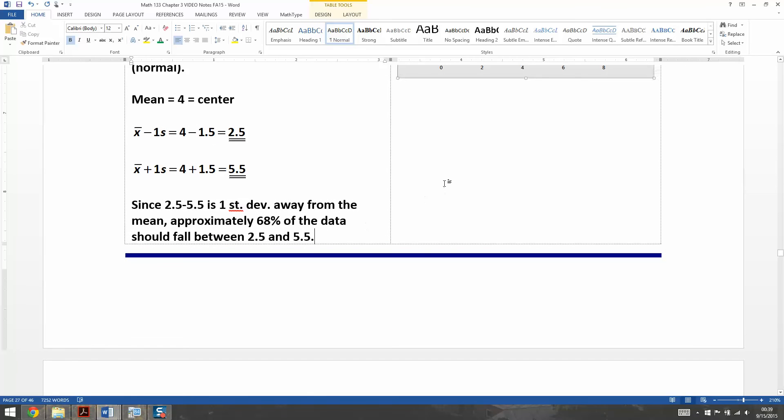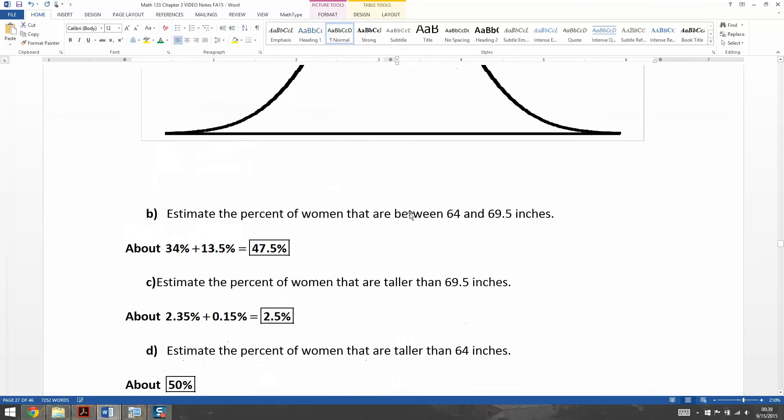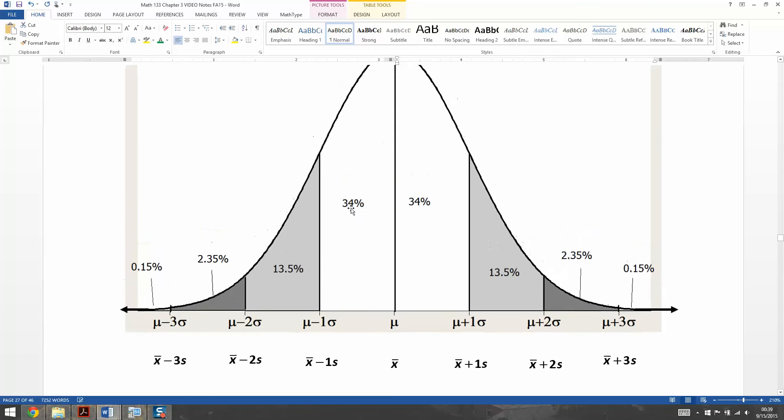If you wanted to make a little note to yourself, like if they had given you 2.5 and 7, then you would have to go and figure out the percentages. So 2.5 is 34% to 5.5 is another 34% to 7 would have added on another 13.5% because 7 would be right over here - that's two standard deviations away.